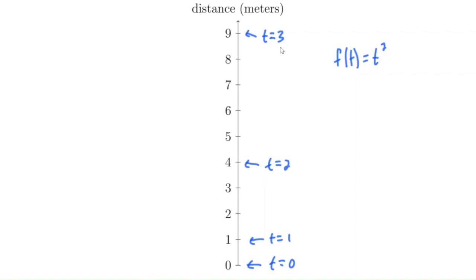But what if we want to find the instantaneous velocity — how fast the car is going exactly at, say, t equals three seconds? How could we do that?